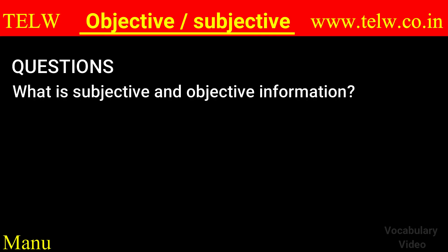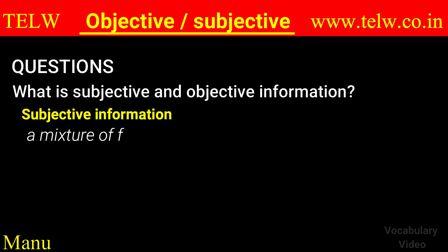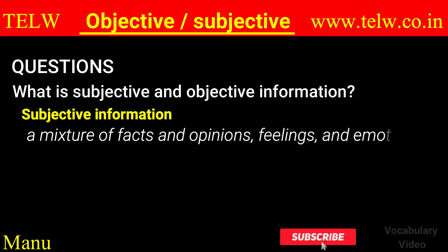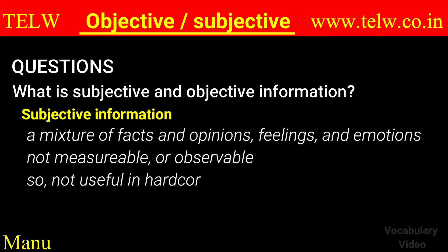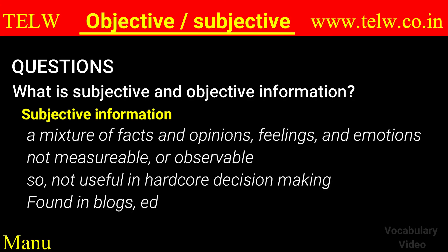Now let's look at one relevant question: what is subjective and objective information? Subjective information is a mixture of facts and opinions, feelings and emotions. They are not measurable or observable, so they are not useful in hardcore decision-making in a business or political scenario. They are found mostly in blogs, editorials, and biographies.